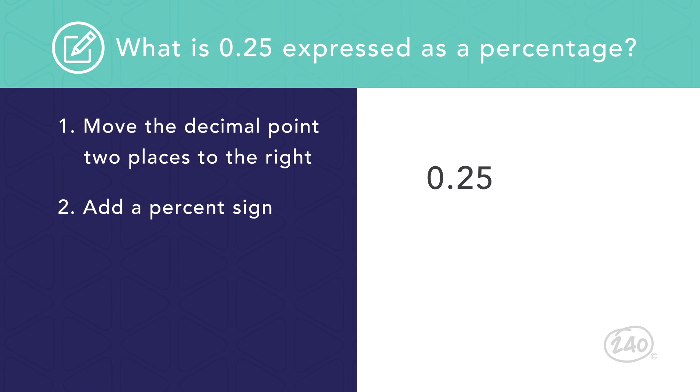Let's look at some example conversions. What is zero point two five expressed as a percentage? Well, you just need to move the decimal place two places to the right and add a percent sign. So zero point two five is equal to twenty five percent.